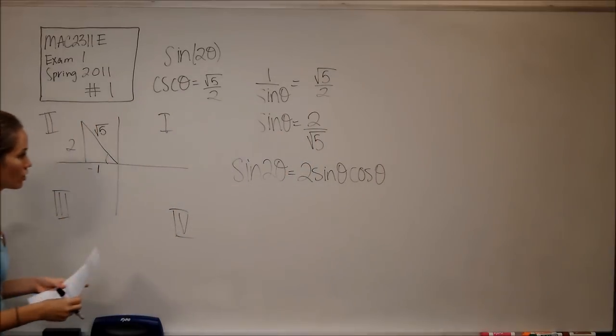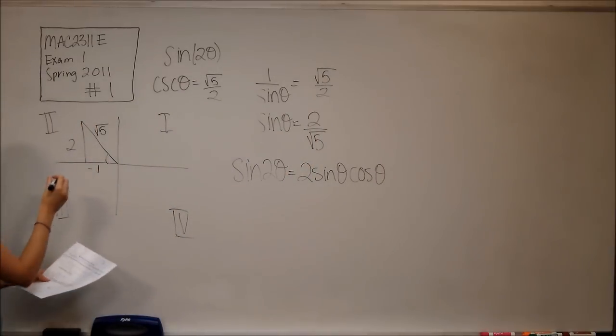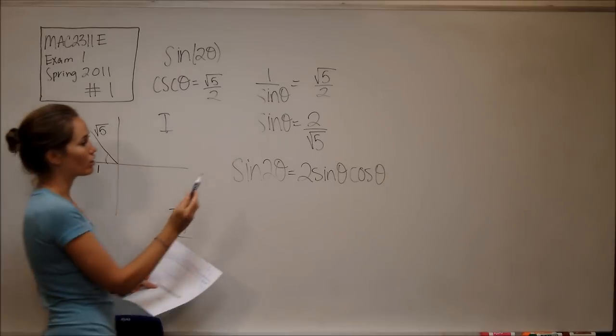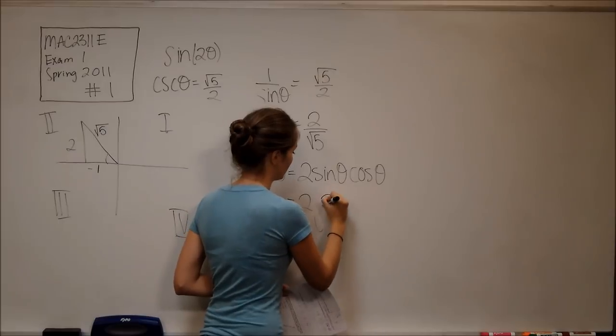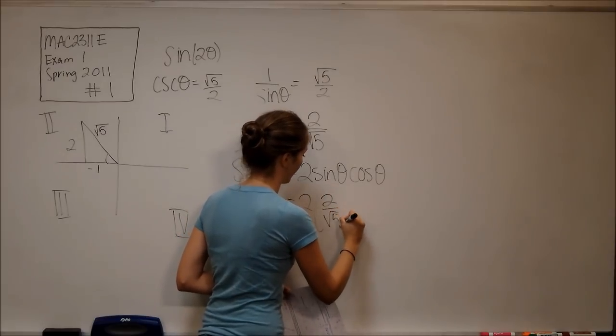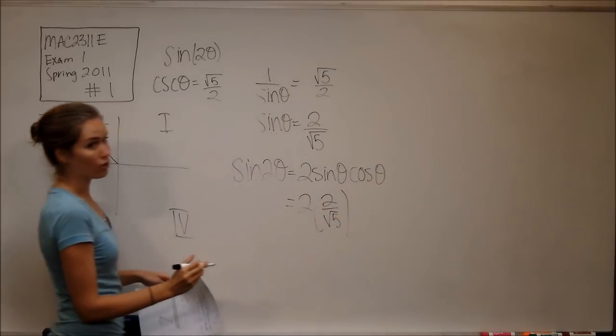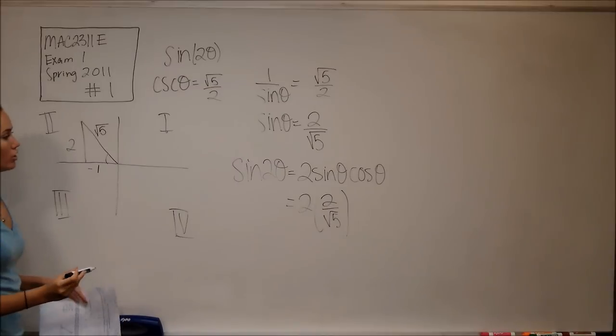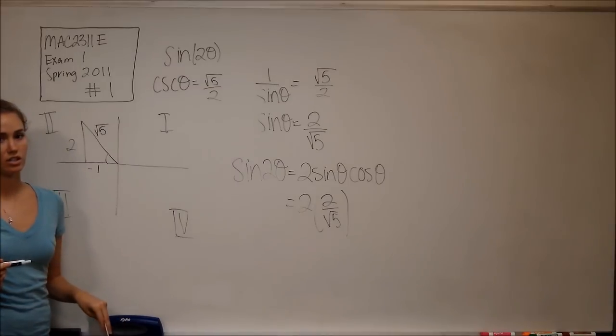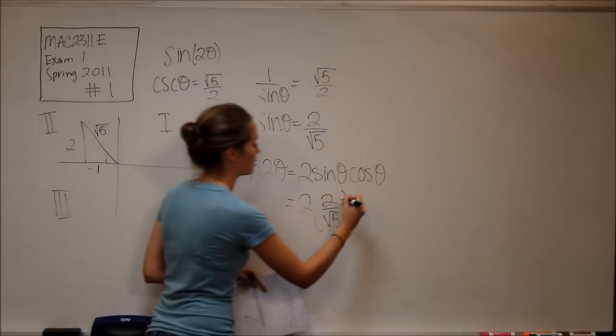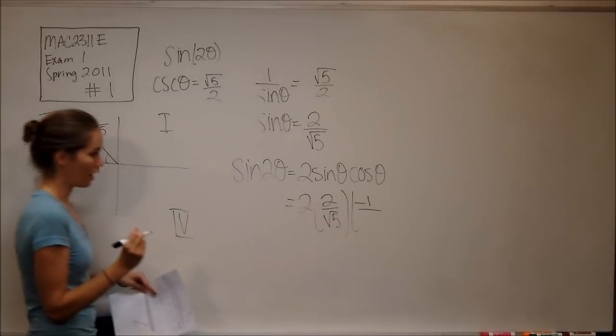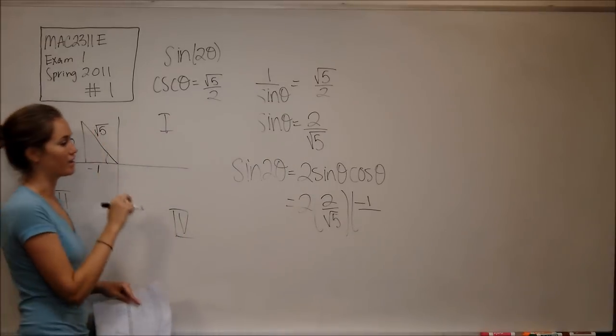Okay, and so we can figure out what sine theta and cosine theta are using our triangle. And we already know that sine theta is equal to that, so we have two times two over square root of five. Now we just need to figure out cosine theta using our triangle, so we know that cosine is adjacent over hypotenuse. So our adjacent is negative one over our hypotenuse, which is the square root of five.